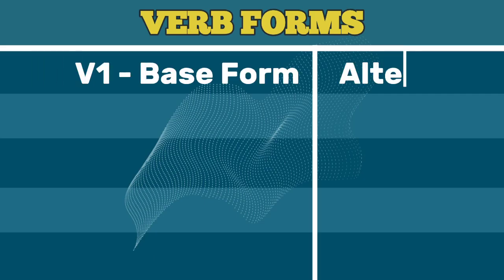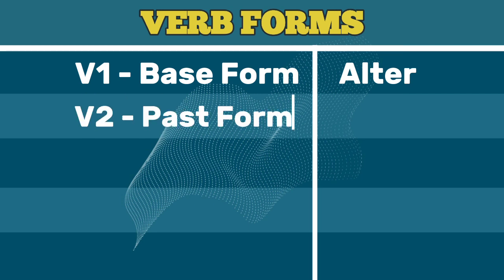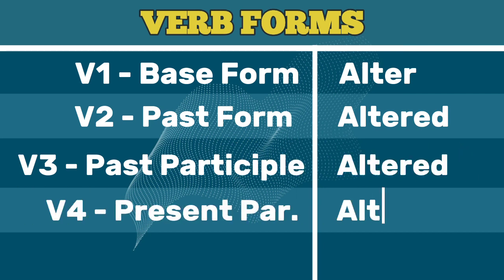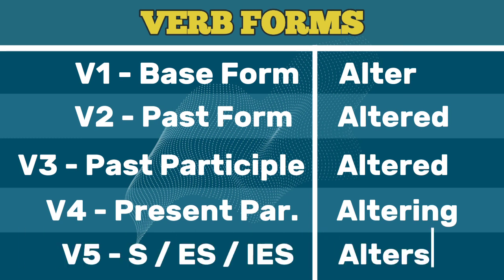V1 base form: alter. V2 past form: altered. V3 past participle: altered. V4 present participle: altering. V5 third person singular: alters.